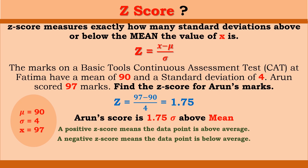We have an example discussed in the first part. The marks on a basic tools continuous assessment test at Fatima have a mean of 90 marks and a standard deviation of 4 marks. Arun scored 97 marks. The question was: find the z-score for Arun's marks. Using the formula z equals x minus mu divided by standard deviation, with mu equal to 90, standard deviation 4, and Arun's score 97, substituting the values we have 97 minus 90 divided by 4, which gives 1.75.